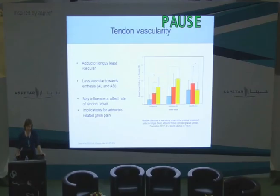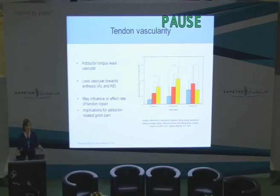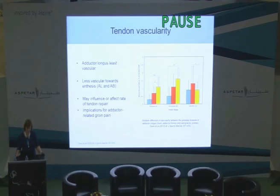We also decided to look at the vascularity of the tendons, and this study was done on cadavers. We expressed the cross-sectional area of the blood vessels relative to the cross-sectional area of the tendon. Adductor longus is shown in blue, brevis in red, and gracilis in yellow. What we found was that adductor longus was the least vascular tendon of all of those, and as you get towards the enthesis they become less vascular, which you would probably expect. Gracilis was a little bit different. This is interesting, and perhaps it has some influence on the rate of tendon injury or some role in the repair. It would be nice to look at this in living individuals.